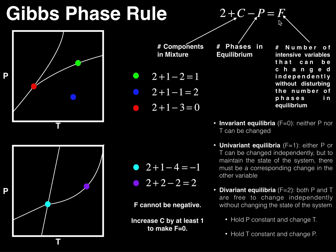Here's the equation: we have 2 plus C minus P equals F. Let's talk about what each of these three variables are.